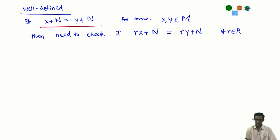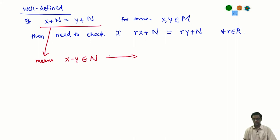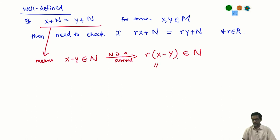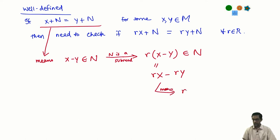Now N is a submodule, so we use the hypothesis: N is closed under scalar multiplication. So we can multiply x minus y by r, and the result must again be an element of N. By the axioms of modules, r(x−y) = rx − ry, so rx minus ry is in N, and this just means that the two cosets rX+N and rY+N are the same. That completes the verification that this definition is actually well-defined.